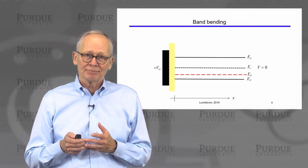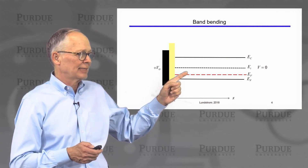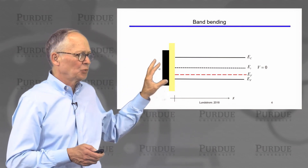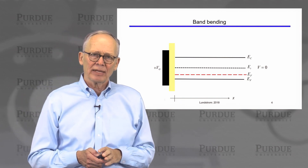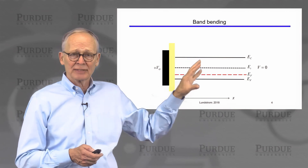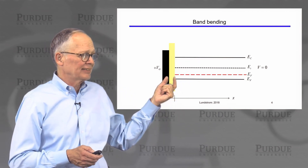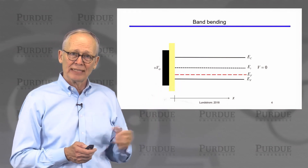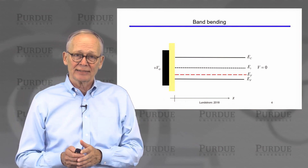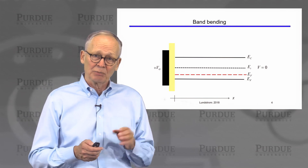When we make a MOS transistor, we will make a metal-oxide-semiconductor structure. Let's ask ourselves what would happen if we applied a positive voltage to this gate electrode. The semiconductor will stay in equilibrium because we have this insulating gate oxide — current can't flow through that insulator. So there's no current flowing, the semiconductor stays in equilibrium, the metal stays in equilibrium, and the Fermi level is flat even when we apply a voltage.